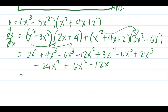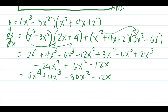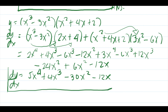Combining like terms: 2x to the 4th plus 3x to the 4th equals 5x to the 4th. Negative 6x cubed plus 12x cubed minus 2x cubed equals 4x cubed. Negative 12x squared minus 24x squared plus 6x squared equals negative 30x squared. Minus 12x. So dy over dx equals 5x to the 4th plus 4x cubed minus 30x squared minus 12x.